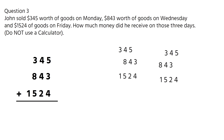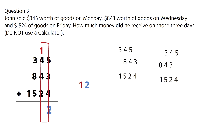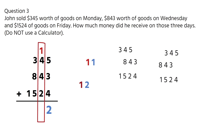Let's add, starting from the right. 5 plus 3 plus 4 is 12. Because it's a two-digit number, we will put the 2 here and carry the 1 to the next column. We move to the next column. We have 1 plus 4 plus 4 plus 2, which is 11. Again, this is a two-digit number, so we will keep the 1 and carry 1 to the next column.